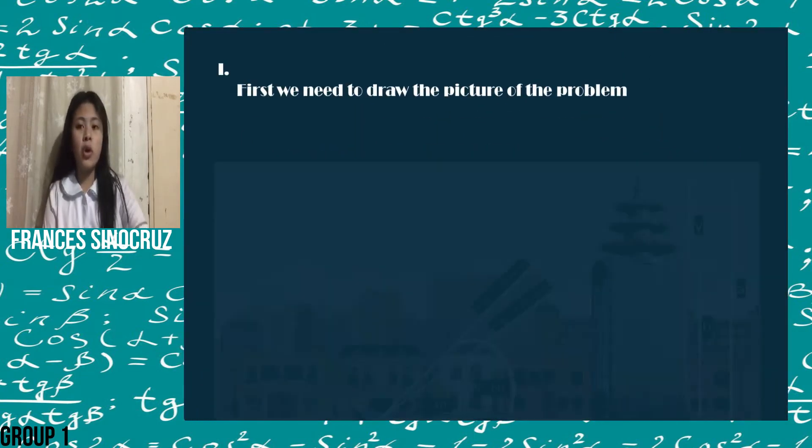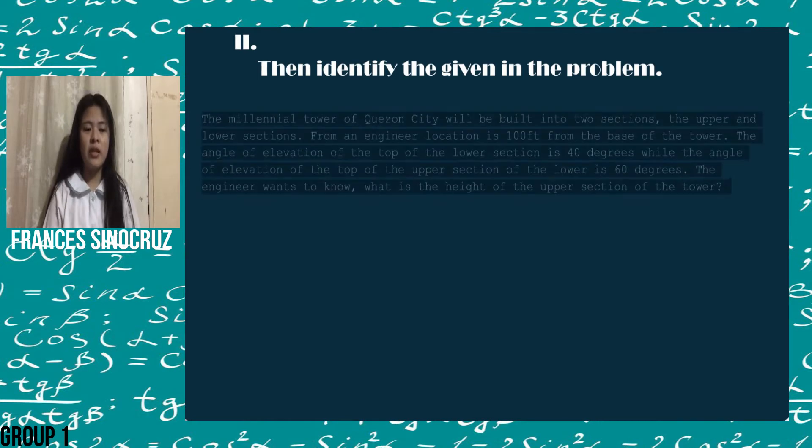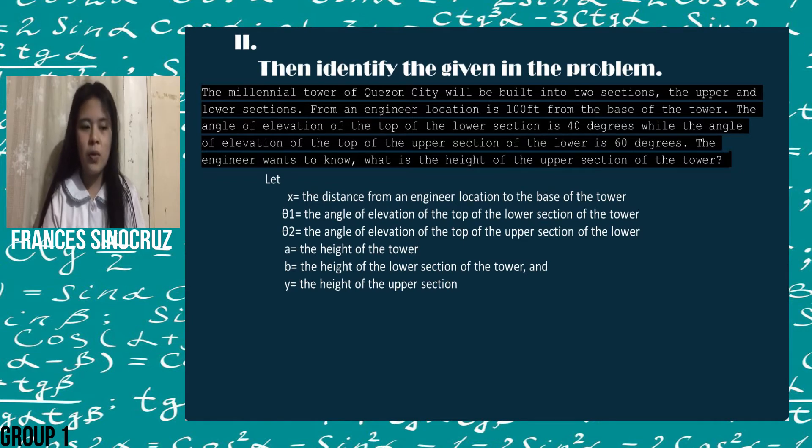First, we need to draw or illustrate the problem. Afterwards, we need to identify what is given. Let x be the distance from an engineer's location to the base of the tower. Theta 1 will be the angle of elevation of the top of the lower section of the tower. Theta 2 will be the angle of elevation of the top of the upper section of the tower. The height of the tower will be denoted by A. The height of the lower section of the tower will be denoted by B. The height of the upper section will be denoted as Y.